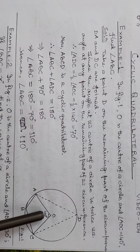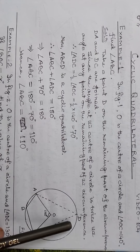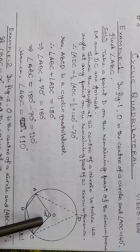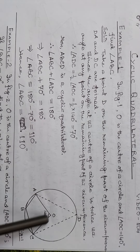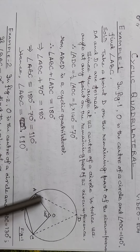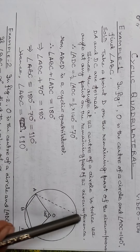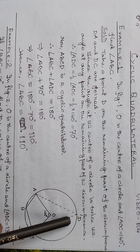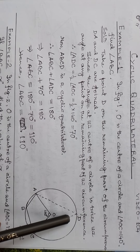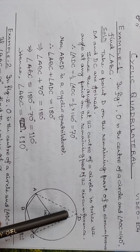We join AD and CD in construction. Angle ADC is equal to half of angle AOC. Since AOC is 140 degrees, half of 140 degrees gives us angle ADC equal to 70 degrees.